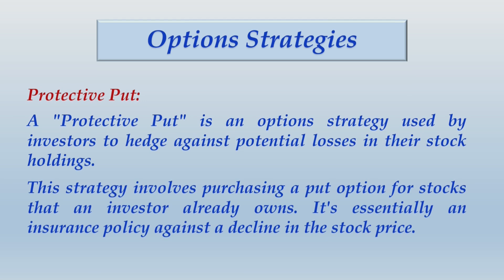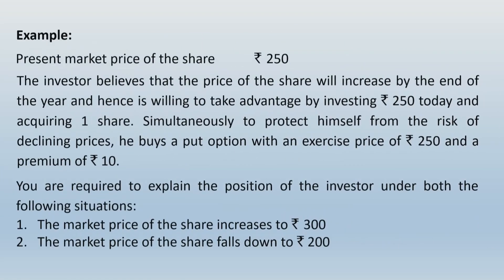Let us understand the whole concept in detail through this example. The present market price of the share is rupees 250. The investor believes that the price of the share will increase by end of the year, and hence is willing to invest rupees 250 today and acquire one share. Simultaneously, to protect himself from the risk of declining prices, he buys a put option with an exercise price of rupees 250 and a premium of rupees 10. You are required to explain the position of the investor when: (1) the market price increases to rupees 300, and (2) the market price falls to rupees 200.